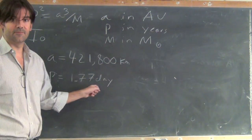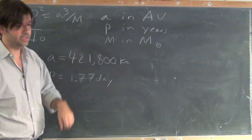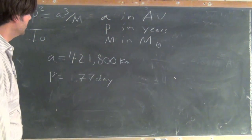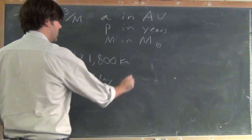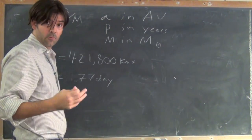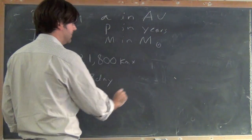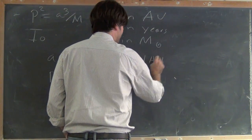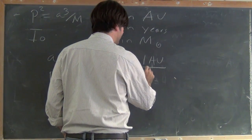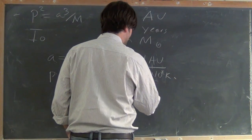So I just need to convert both of these into astronomical units and into years, and then I can use Kepler's law. I've worked out before that an astronomical unit in kilometers is 1.5 times 10 to the 8th kilometers.